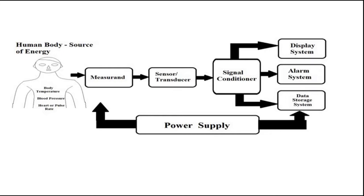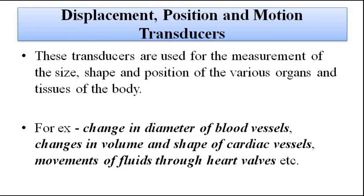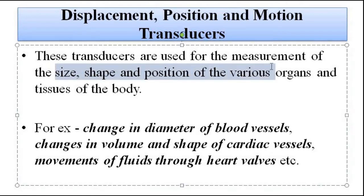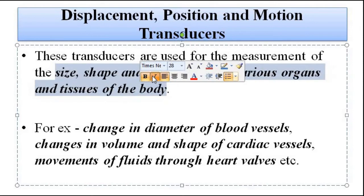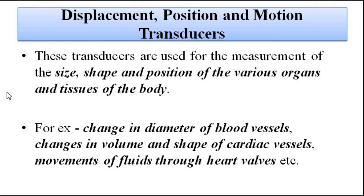Please watch the videos on sensors, transducers, and instrumentation posted earlier — that playlist will help you understand these things in a better way. Here we will quickly go through the various things since they have already been discussed in detail in that playlist. Displacement, position, and motion transducers are used for the measurement of the size, shape, and position of the various organs in the body.